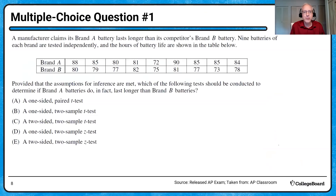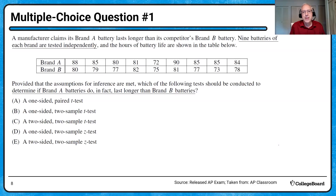Our first example is a multiple choice question. It says a manufacturer claims its brand A battery lasts longer than its competitor's brand B battery. Nine batteries of each brand are tested independently, and the hours of battery life are shown in a table. For example, the first battery for brand A lasted 88 hours and brand B lasted 80 hours. The question asks: provided that the assumptions for inference are met, which test should be conducted to determine if brand A batteries do in fact last longer than brand B batteries?